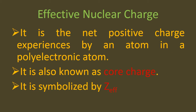What is effective nuclear charge? It is the net positive charge experienced by an electron in a polyelectronic atom — meaning an atom with multiple electrons present in inner shells, which reduce the charge of the nucleus over the outermost shell electrons. A very important exam question: the other name of effective nuclear charge is core charge, and it is symbolized as Z-effect.